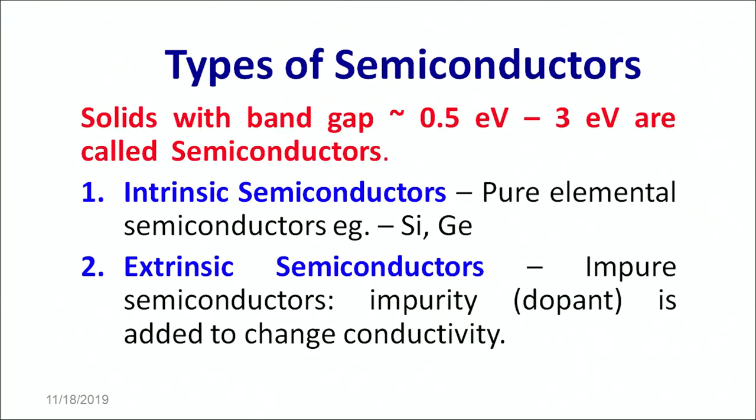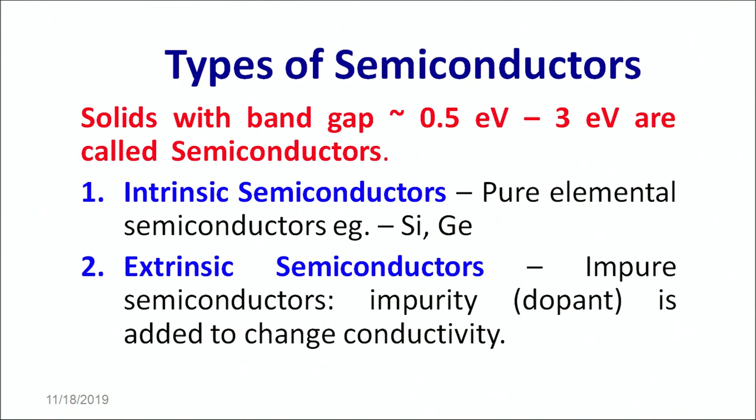As discussed in the previous part, semiconductors are those materials whose energy band gap is of the order of 0.5 electron volts to 3 electron volts. These materials have conductivity lying within the conductivity of the conductors and the insulators, and it is this particular property which makes them really special. On the basis of their kind, they are classified as intrinsic semiconductors and extrinsic semiconductors.